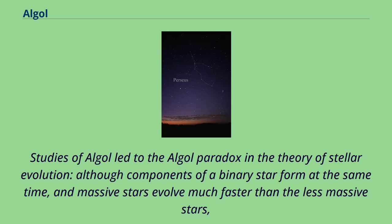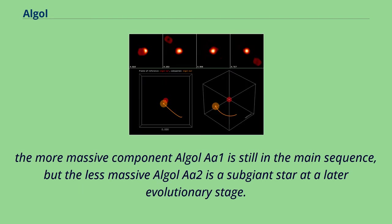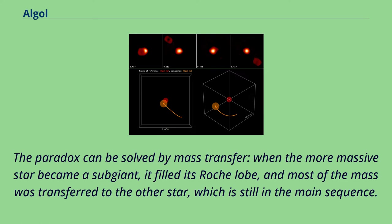Studies of Algol led to the Algol paradox in the theory of stellar evolution. Although components of a binary star form at the same time, and massive stars evolve much faster than the less massive stars, the more massive component Algol A1 is still in the main sequence, but the less massive Algol A2 is a subgiant star at a later evolutionary stage. The paradox can be solved by mass transfer. When the more massive star became a subgiant, it filled its Roche lobe, and most of the mass was transferred to the other star, which is still in the main sequence.